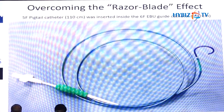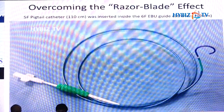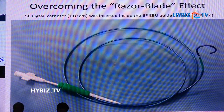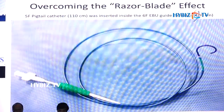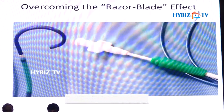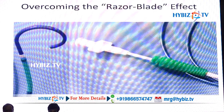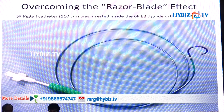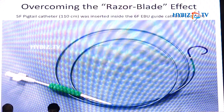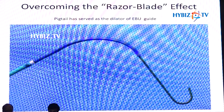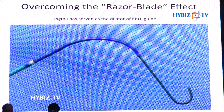What I did was insert a pigtail catheter inside the guide catheter. The pigtail is a longer catheter than the guide catheter, so both ends of the pigtail were outside the guide catheter — the distal end protruding beyond the distal end of the guide catheter, and the proximal half outside the proximal end. This pigtail-plus-guide-catheter assembly essentially obliterates the free space in the guide catheter, thereby avoiding the razor blade effect.